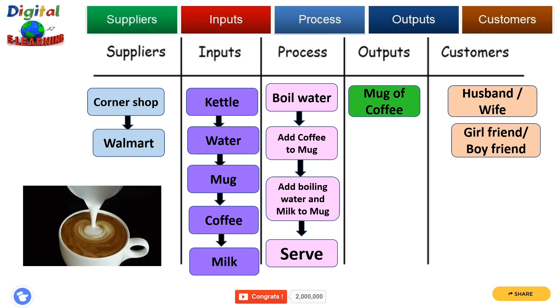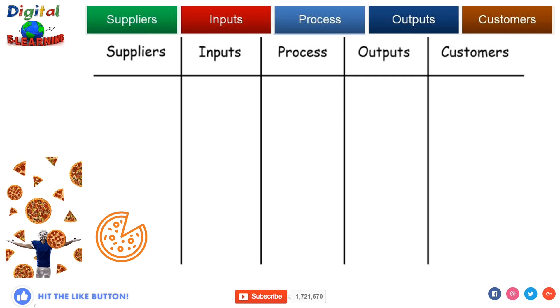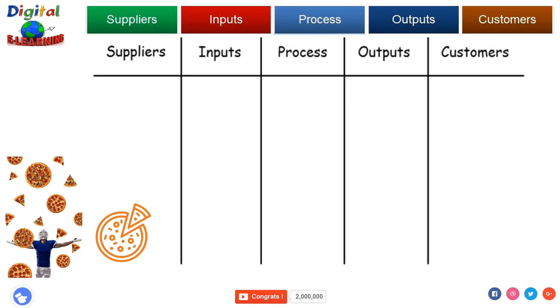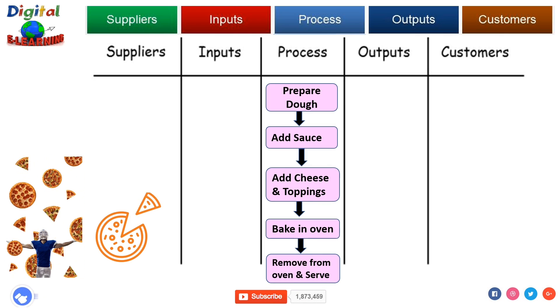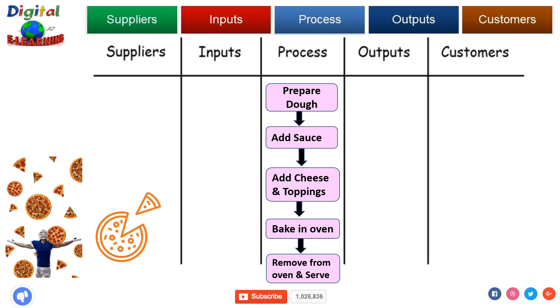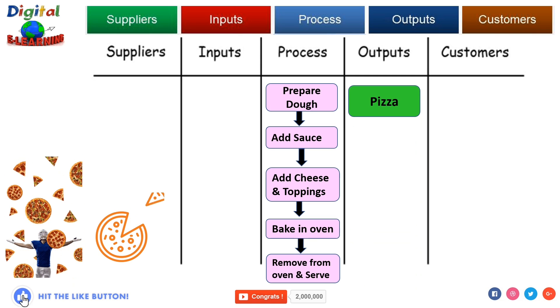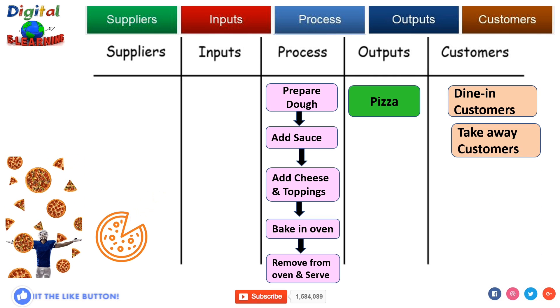Let us take another example of a pizza process and try to use this tool SIPOC diagram. We'll list first the process: prepare dough, add sauces, add cheese and toppings, bake in oven, and remove from the oven and serve. These are my process steps of making a pizza. What is the output that I get? A pizza. Customers could be my dining customers or takeaway customers.